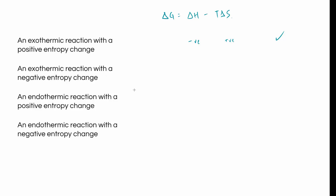For an exothermic reaction with a negative entropy change: delta H is negative but we're subtracting a negative delta S term. At very high temperatures that term becomes large, and we end up with a positive delta G — which means not feasible. So this reaction will only be feasible at lower temperatures. There will be a cut-off temperature above which it's no longer feasible.